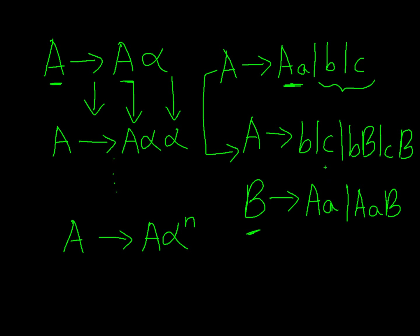So what we did is: for the productions of A, we ignored the first production of A, then brought down the other two productions and joined a B at the end. And for the productions of B, we took the first production and joined it with a B. This is how we remove left recursion.